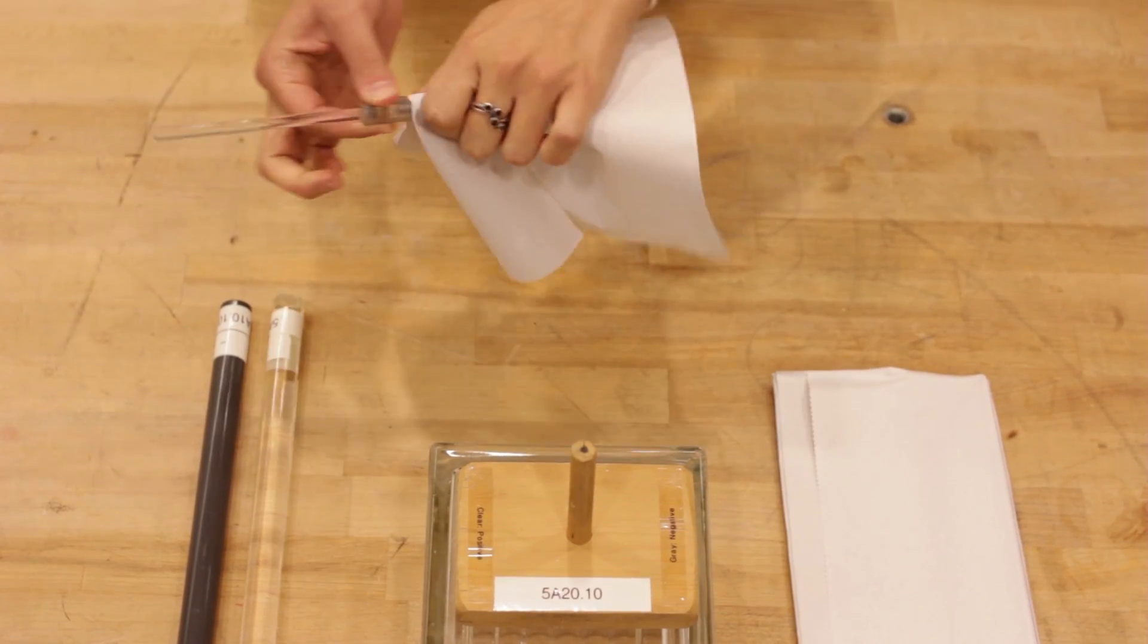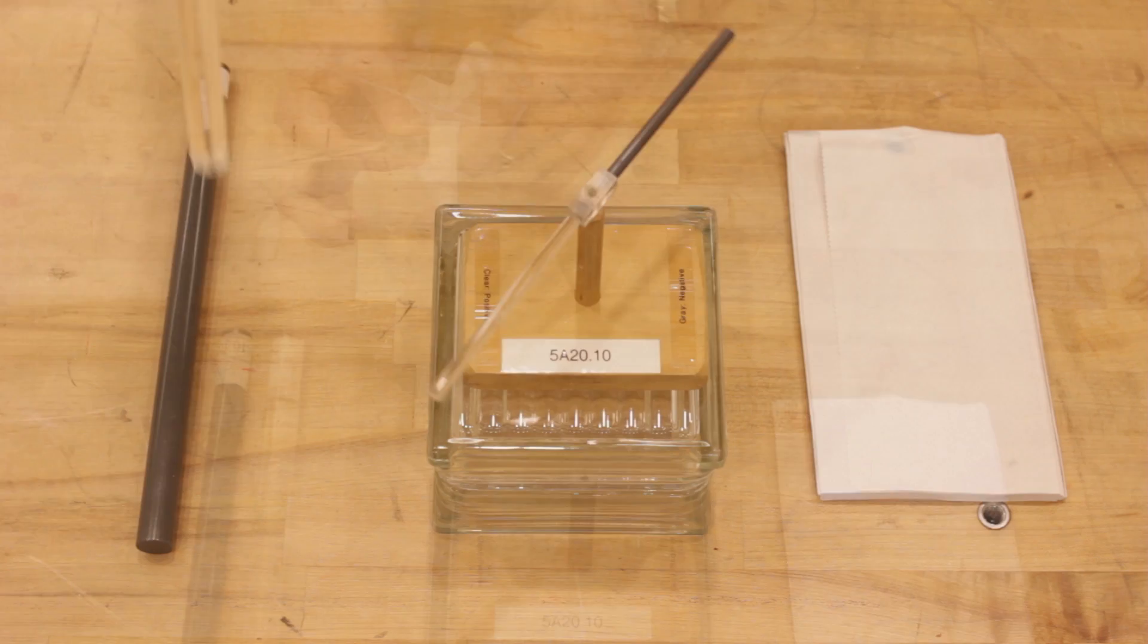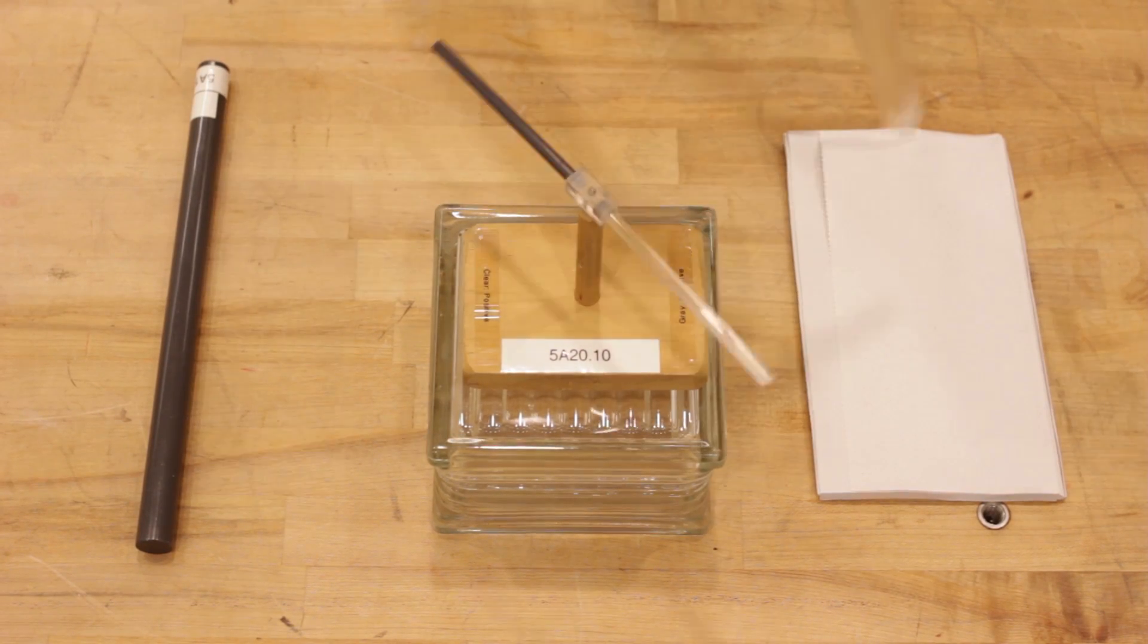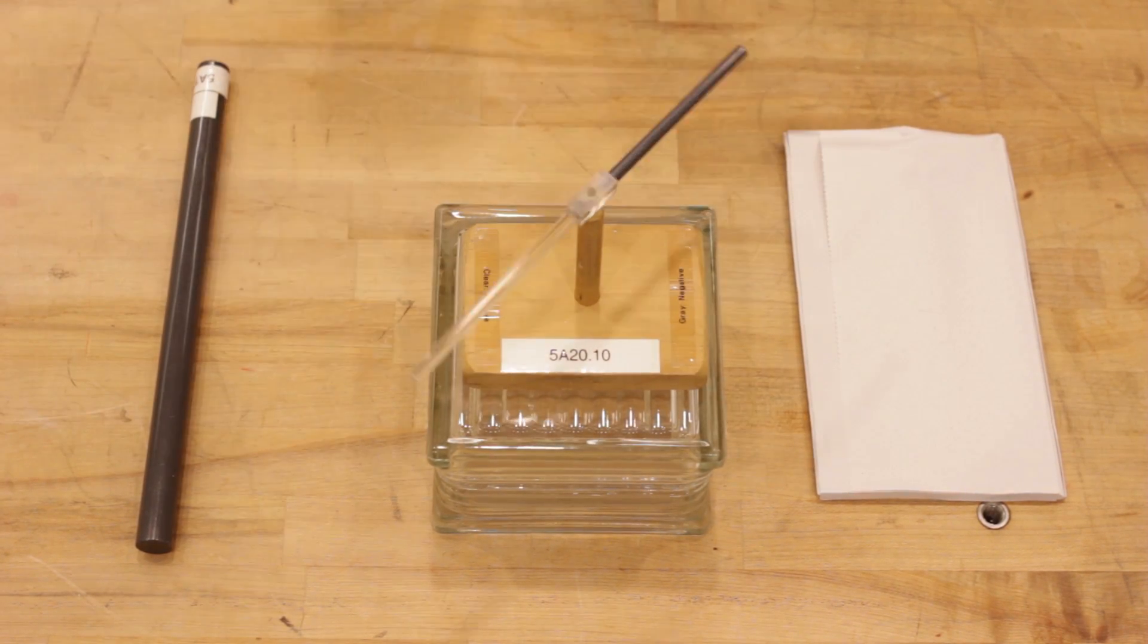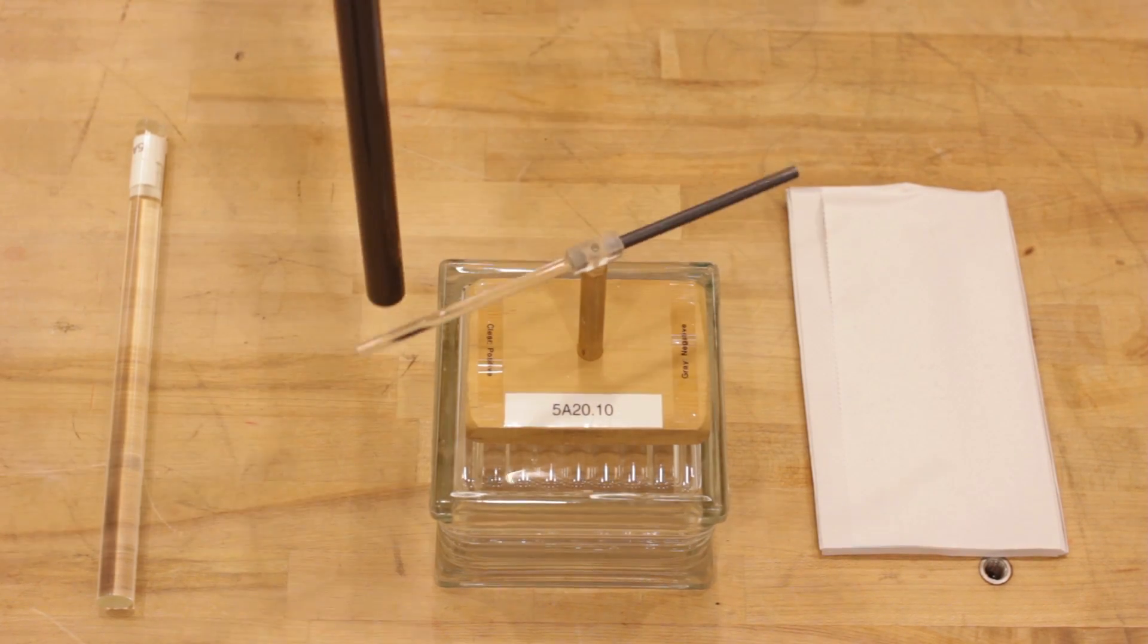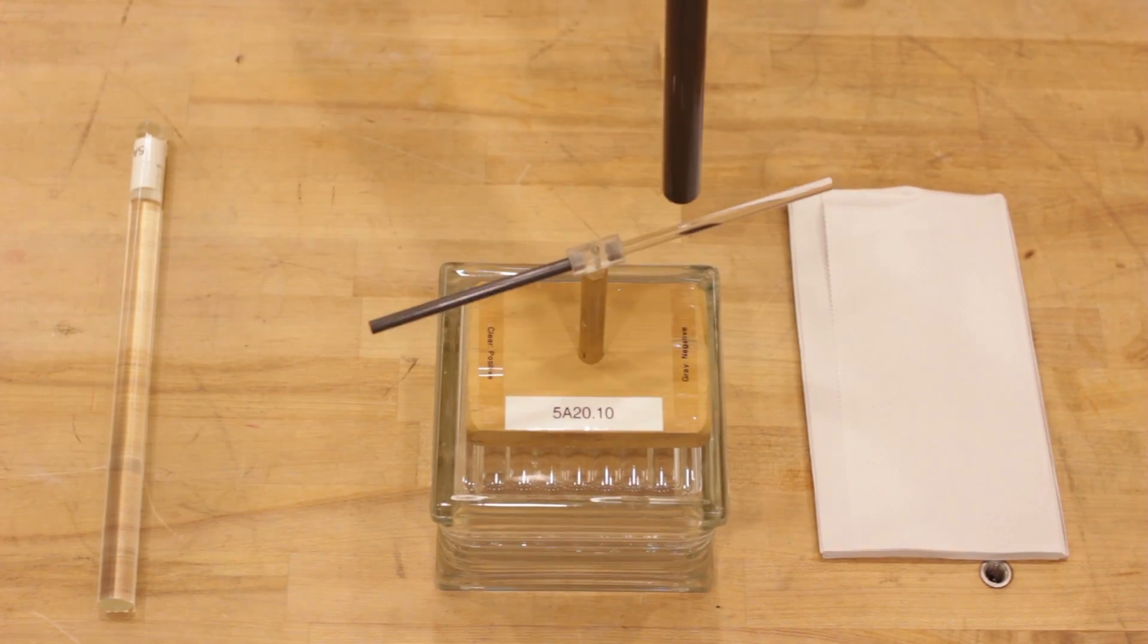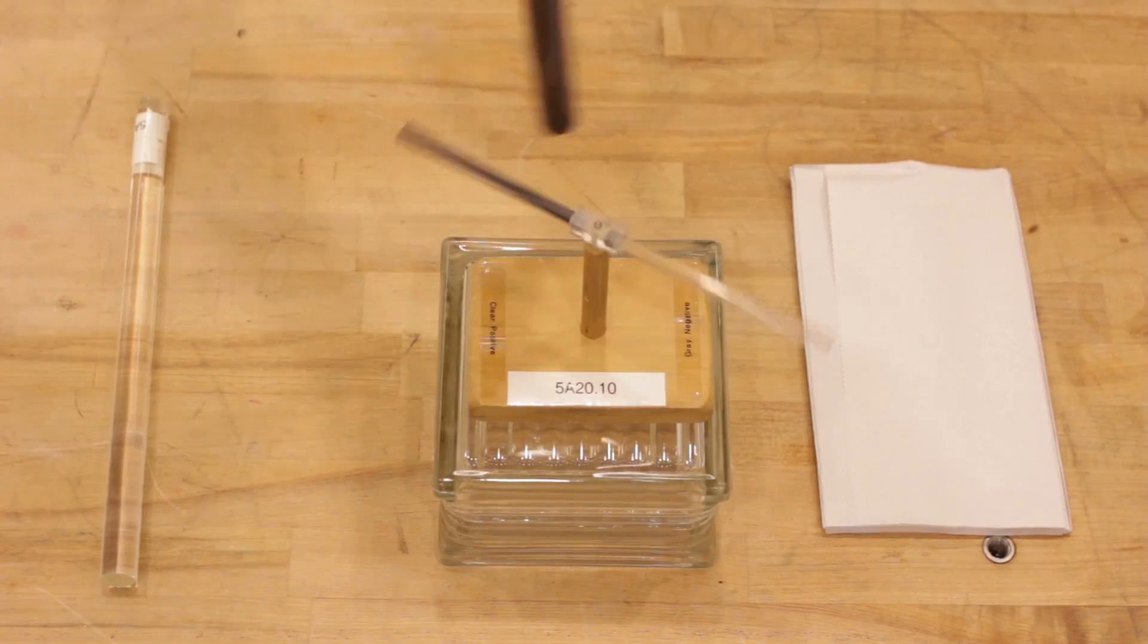I begin by charging both halves of the smaller rods. Note that when I rub the acrylic rod, it attracts the PVC rod and repels the acrylic rod. If I rub the PVC rod, it attracts the acrylic rod and repels the PVC rod.